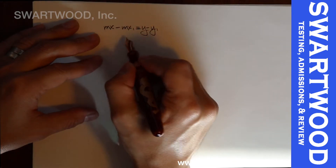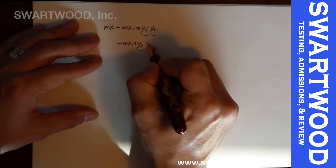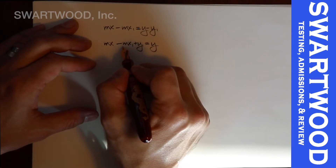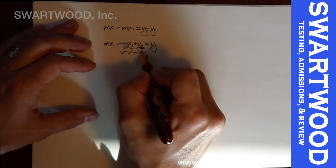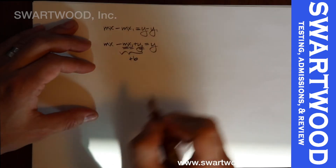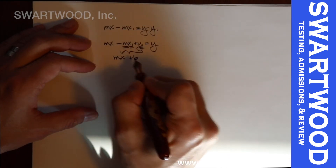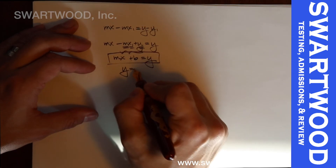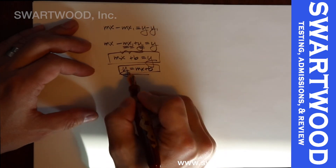We collect all the constants by bringing them to one side — add y1 to both sides. Remember: m is a fixed number, x1 is a constant, y1 is a constant, so when you add them together you just get one number. Let's call that plus b. So this whole constant piece we'll call b, and then we have y equals mx plus b — that is the slope-intercept form.